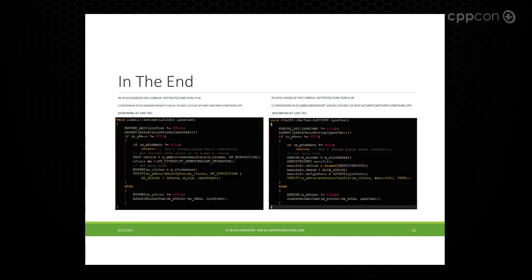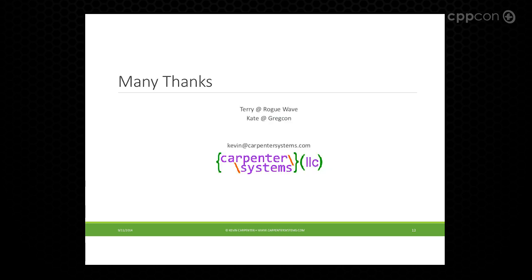In the end, Terry over at Rogue Wave helped me find the problem. Microsoft had made a change from 2010 to 2012: ModifyMenuItem became SetMenuItemInfo. They gave us a patch and it ended up working. But that was my four-year bug. Got to thank Terry at Rogue Wave and Kate for kicking me up here. If you want to tell me how bad this plan was, there's my email address. Thank you.